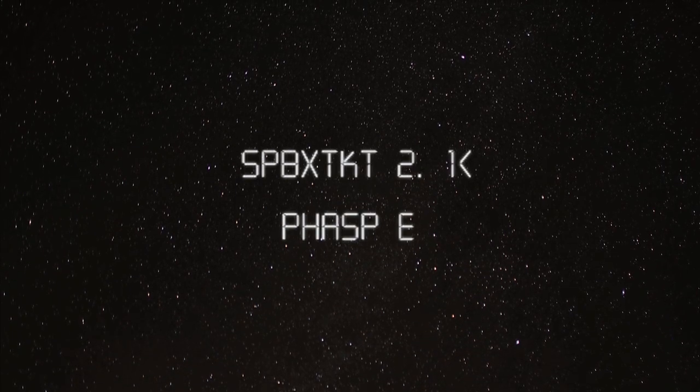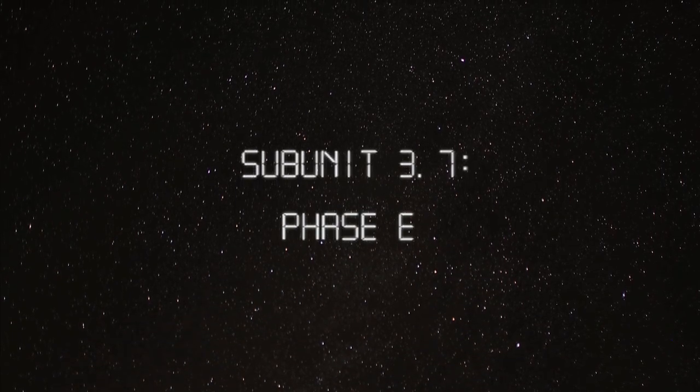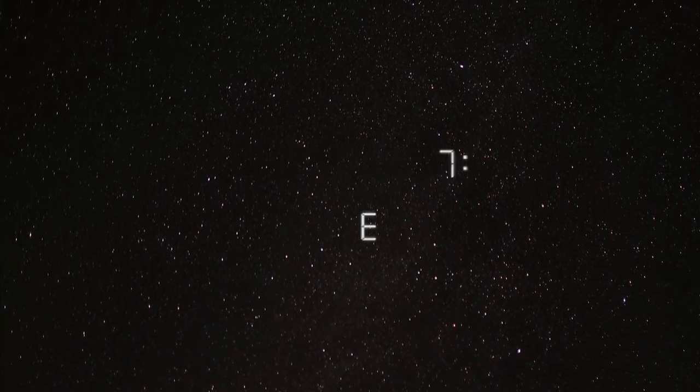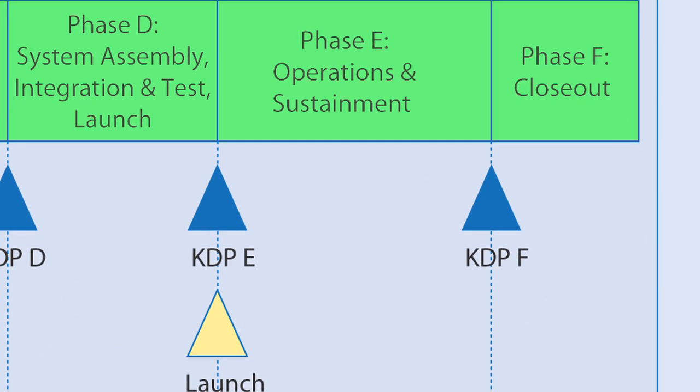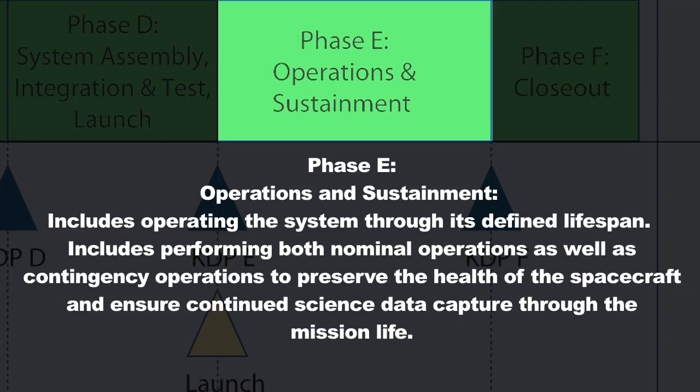Subunit 3.7, Phase E. Now let's talk about Phase E, the operations phase of the life cycle. Once the system's been verified and validated both on Earth prior to launch and then after it's been put on orbit to make sure it'll meet all of its high-level requirements and objectives, the nominal operational phase commences.